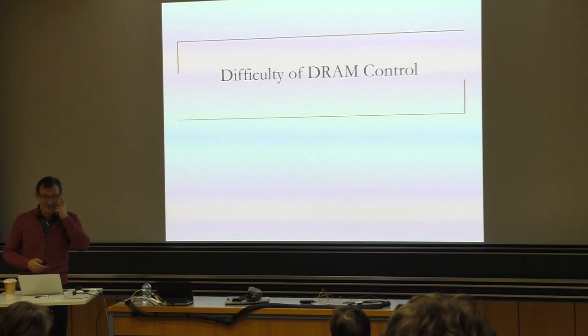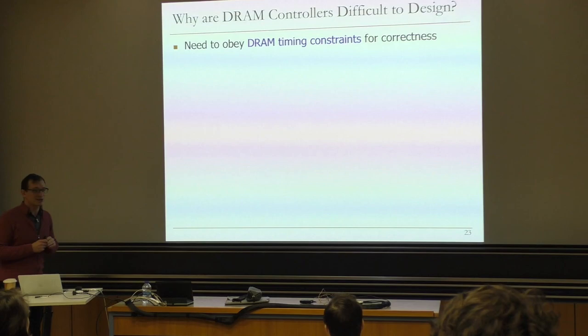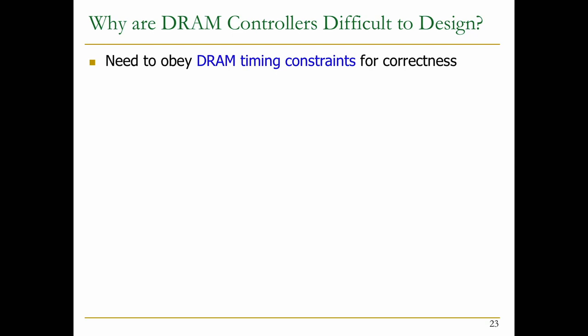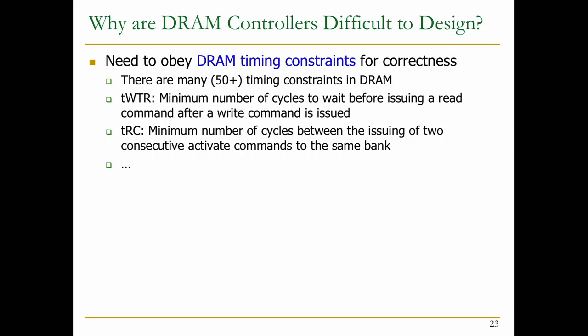Let's talk about the difficulty of DRAM control a little more. Why are DRAM controllers difficult to design? There are many DRAM constraints — actually 50 is an understatement; there are more than 100 DRAM timing constraints. For example, there's write-to-read latency — the minimum number of cycles to wait before issuing a read command after a write command. This is at the rank level — you cannot do reads and writes simultaneously. If you want to switch from write mode to read mode, you need to wait for some time.